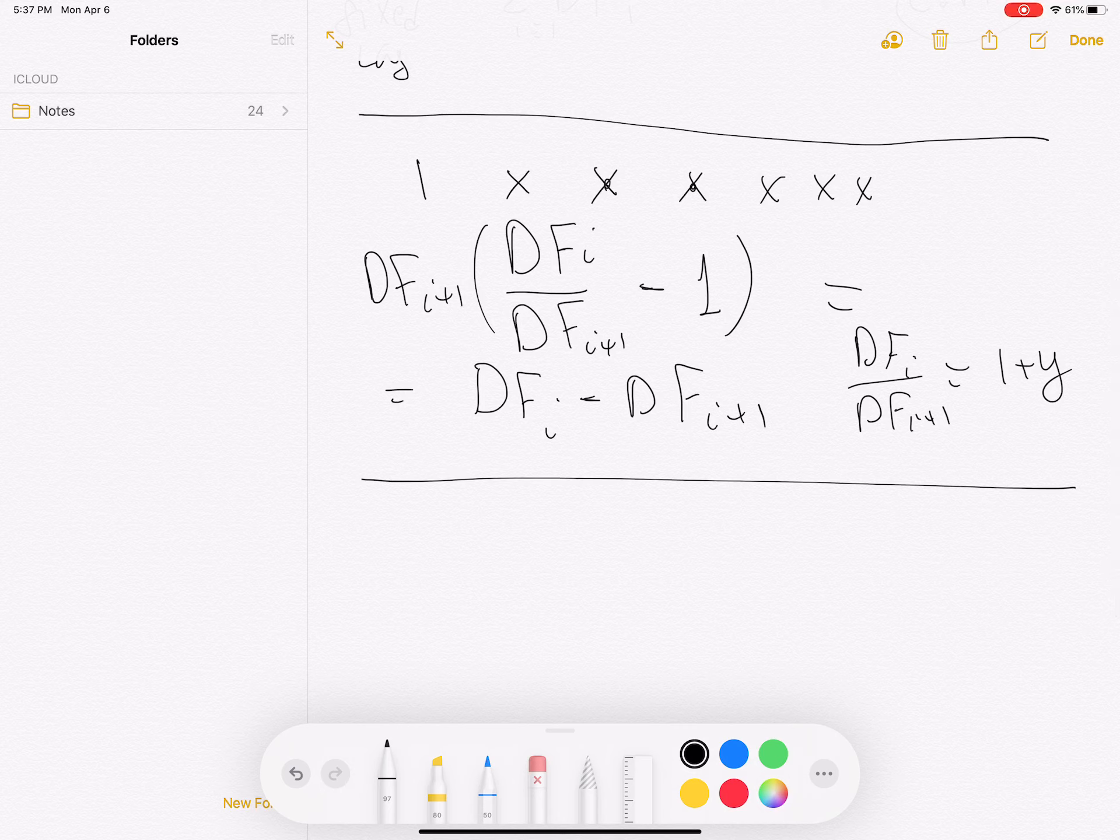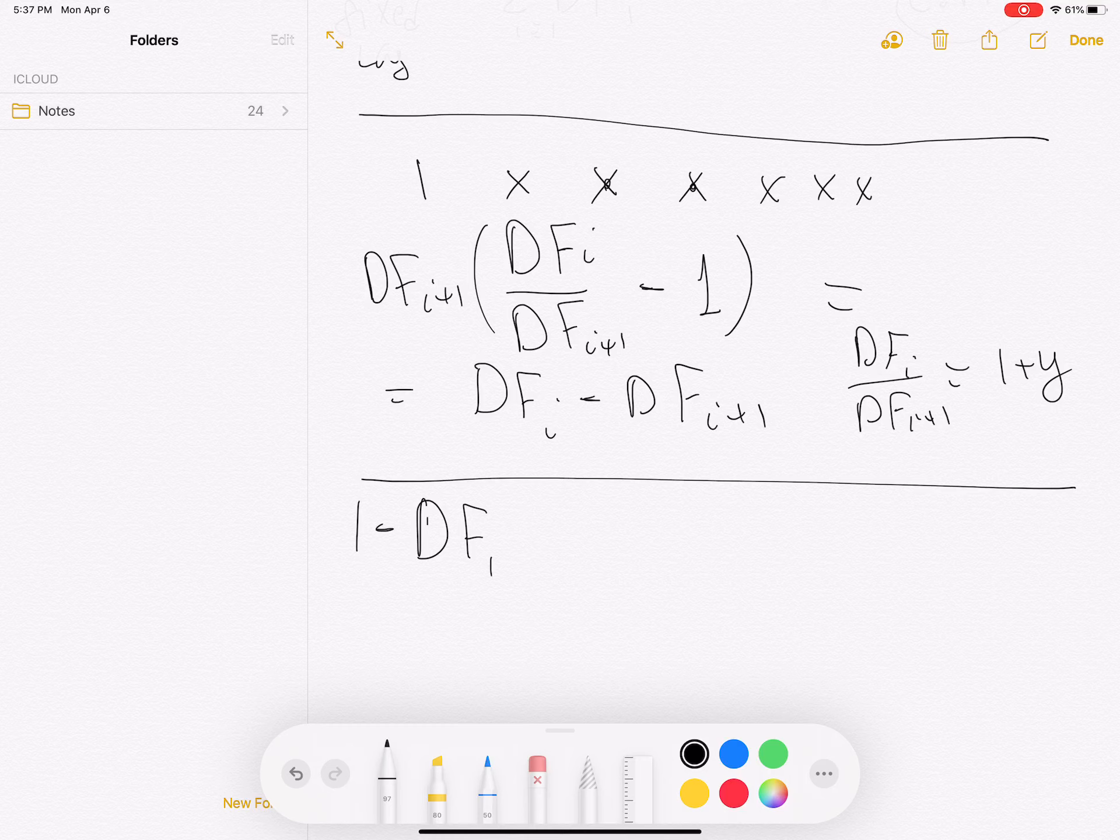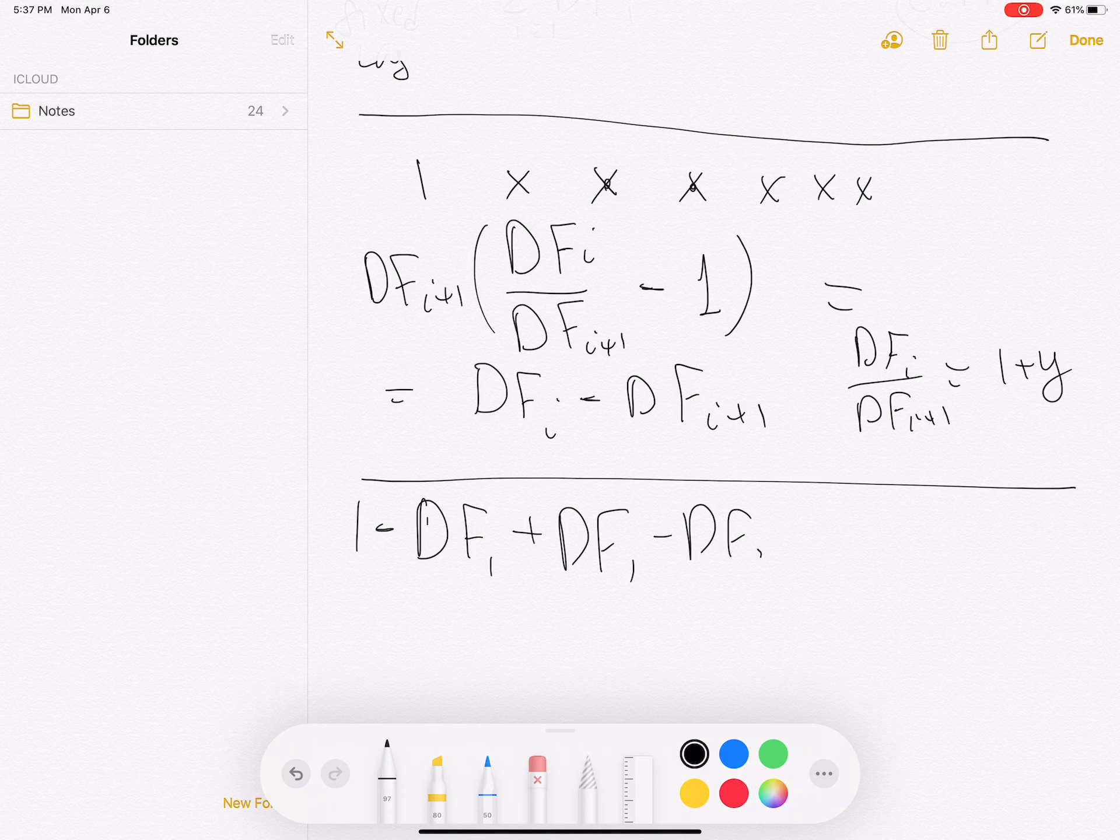We start with DF1. We start with 1 minus DF1 plus DF1 minus DF2 plus yada yada yada DFn-1 minus DFn.